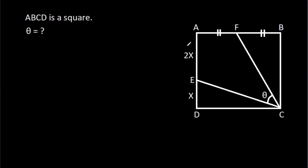In this video, we have been given that ABCD is a square and AE is 2x, DE is x, AF is equal to BF, and angle ECF is theta. We have to find theta.